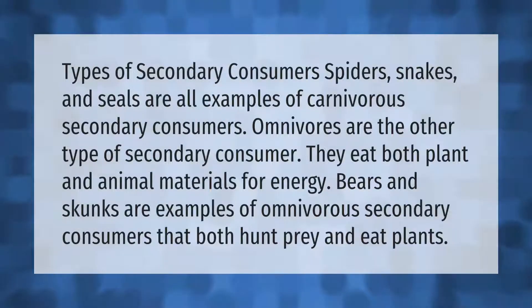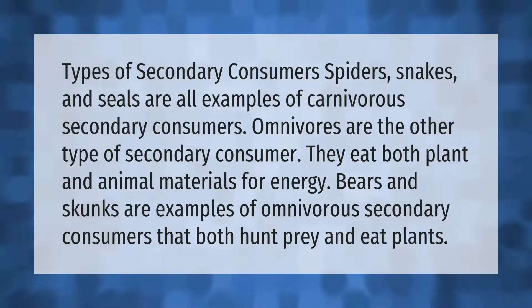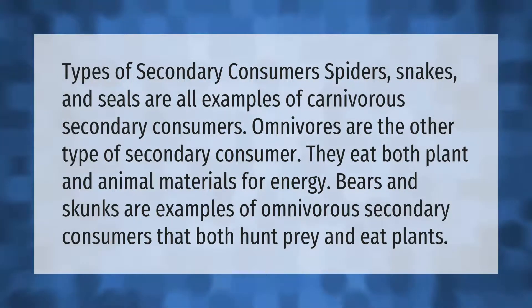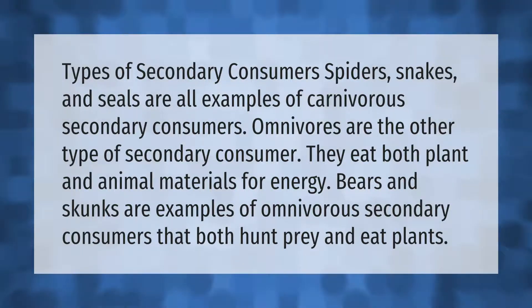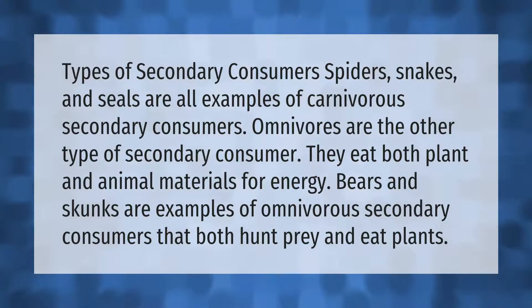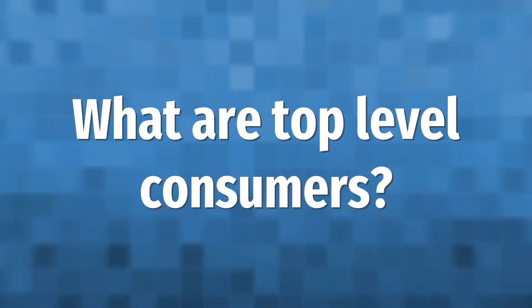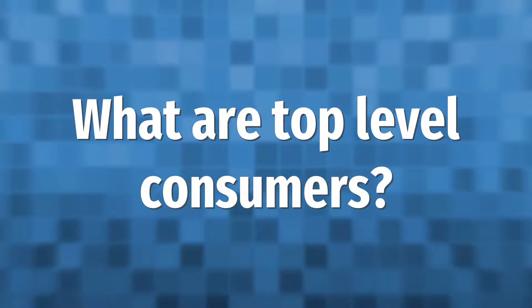Types of secondary consumers: spiders, snakes, and seals are all examples of carnivorous secondary consumers. Omnivores are the other type of secondary consumer — they eat both plant and animal materials for energy. Bears and skunks are examples of omnivorous secondary consumers that both hunt prey and eat plants.